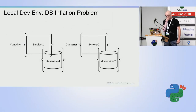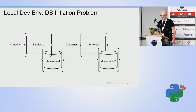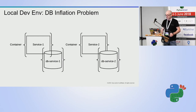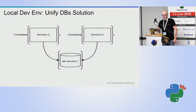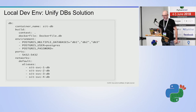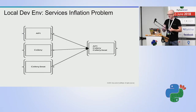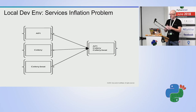Another issue we encountered was multiple databases — different services depend on Postgres containers with relevant databases. In our unified compose, rather than duplicating Postgres containers, we decided to unify all databases under one DB container, using a script that loads all the databases. We also encountered service inflation — some services are built from APIs and offline processing — and we decided to unify them into one container to avoid having too many services.